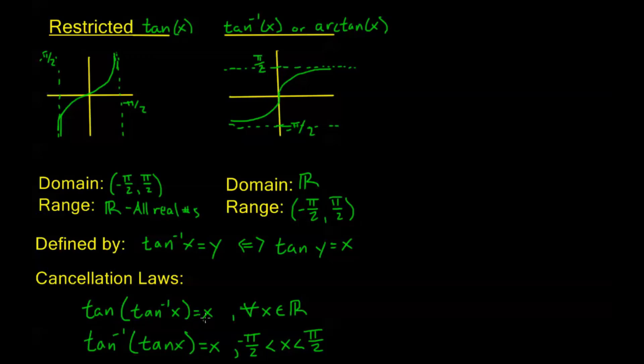Let's do some examples. Let's say I had tangent inverse of 1. This basically says, where does tangent equal 1 between negative pi over 2 and pi over 2? I know that tangent of pi over 4 is 1—that's where both sine and cosine are equal to each other inside of my restricted domain here. So tangent inverse of 1 is going to be equal to pi over 4. That means tangent of pi over 4 equals 1.